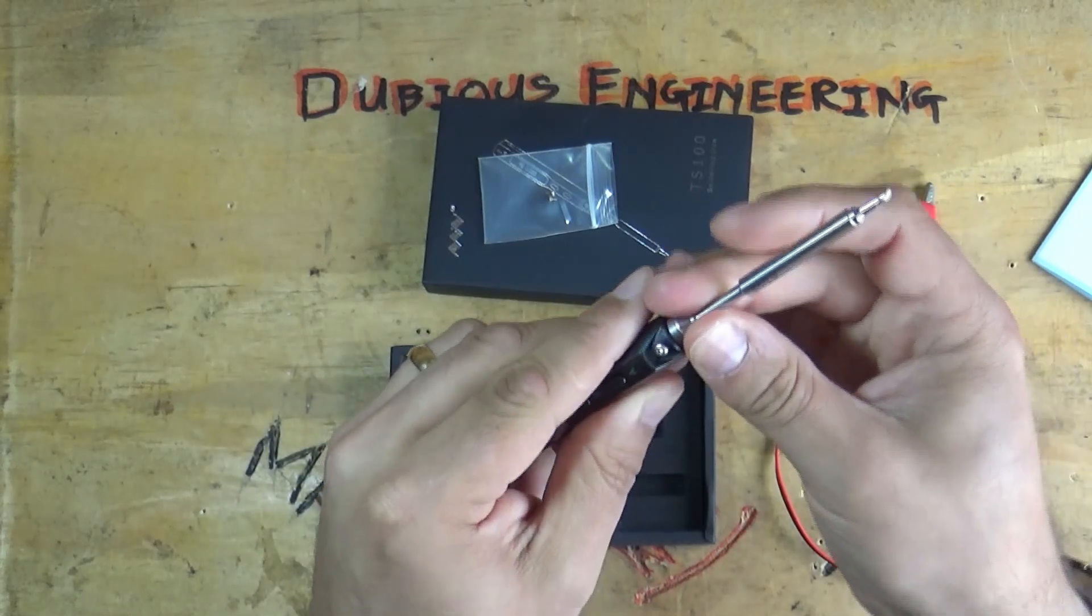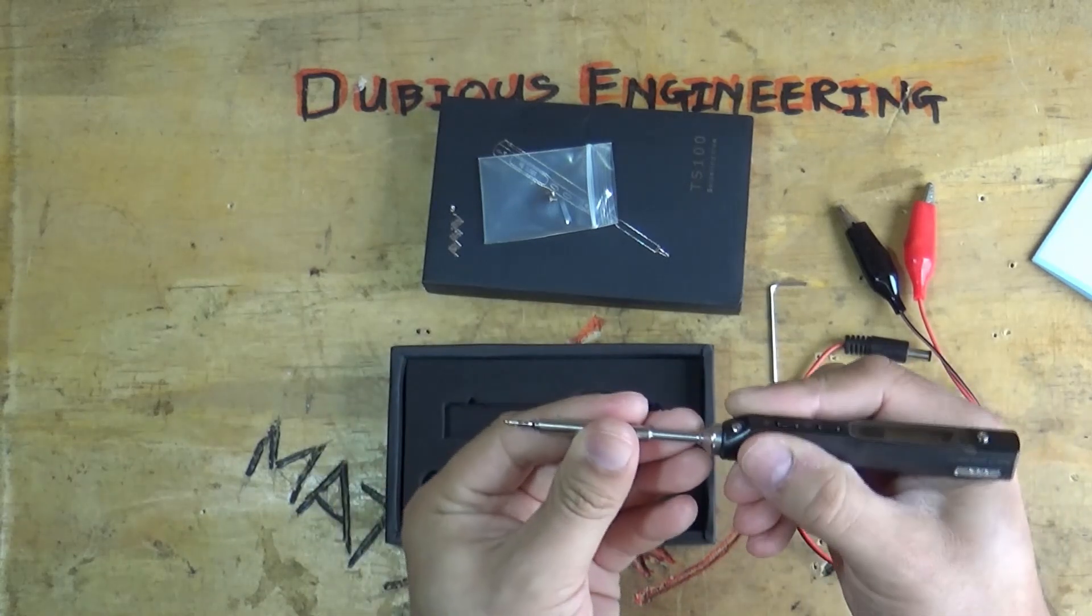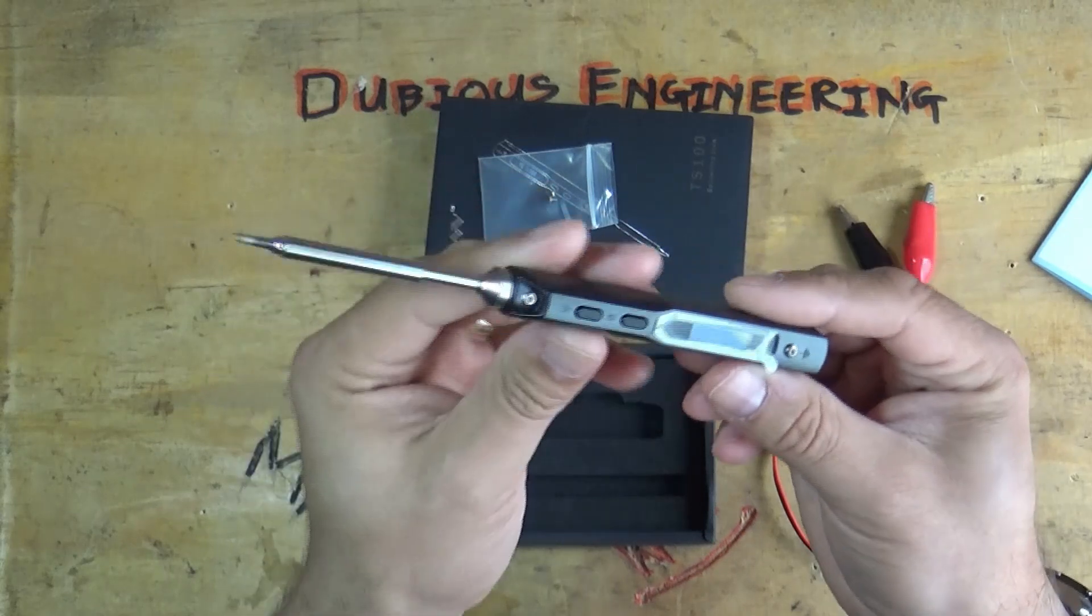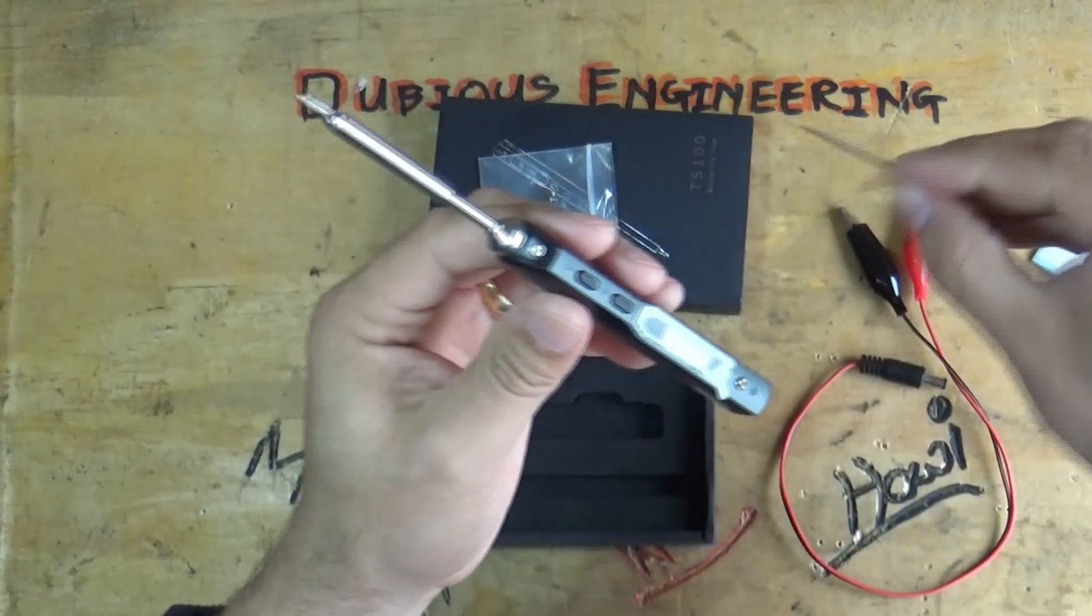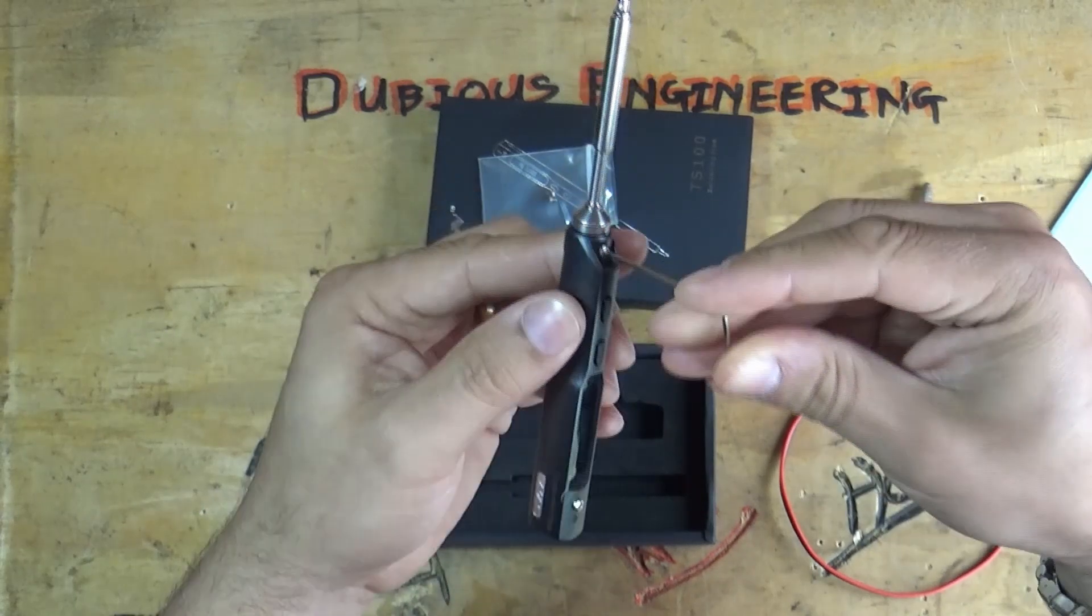And you can get a variety of different iron tips for it. I bought the cheap one with just the single iron tip option. But yeah, so what we're going to do is get on and do a little bit soldering in a few minutes and just sort of show you how this thing performs. And it does actually perform quite well. So far, I've been quite impressed with it.